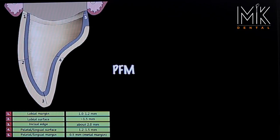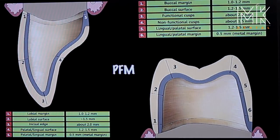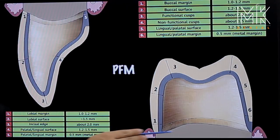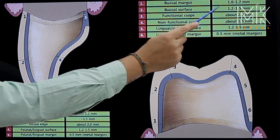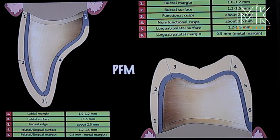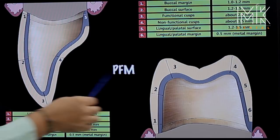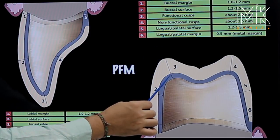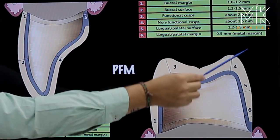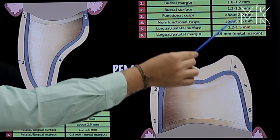For a posterior PFM restoration, it's again a modified shoulder towards the buccal and a lingual metal collar in a deep chamfer at only 0.5 millimeters. The margin amount remains the same at 1 to 1.2 millimeters. Importantly, for posteriors you need to consider occlusal clearance: on the functional cusp you need about 2 millimeters of reduction, while towards the non-functional cusp the reduction is about 1.5 millimeters.